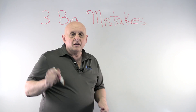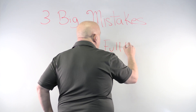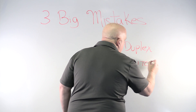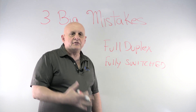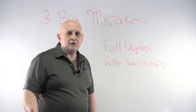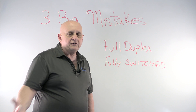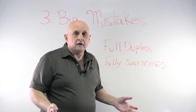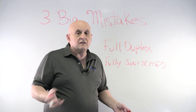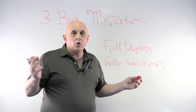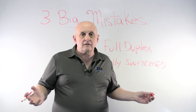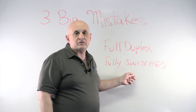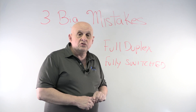The first mistake that people make is not using full duplex on a fully switched network. People are still using things other than switches — some are trying to use hubs, some other kinds of physical layers. The Ethernet IP and SIP specifications don't say much about the physical layer, so you can make these mistakes. You need to use a fully switched network, meaning switches — I prefer managed switches — and you have to make sure all your devices are using full duplex.